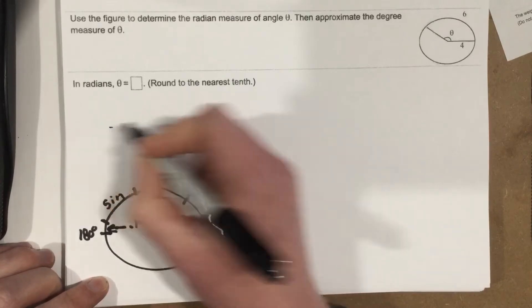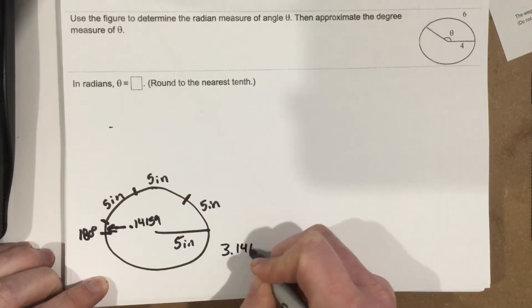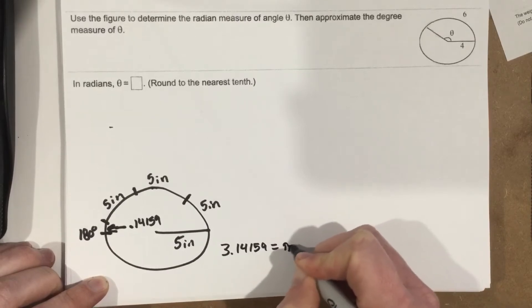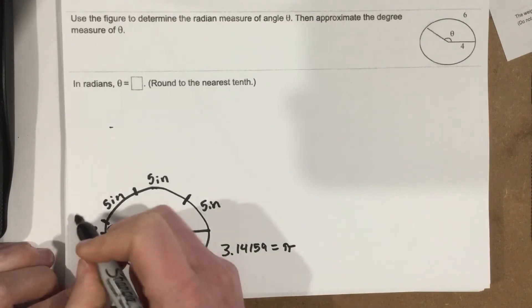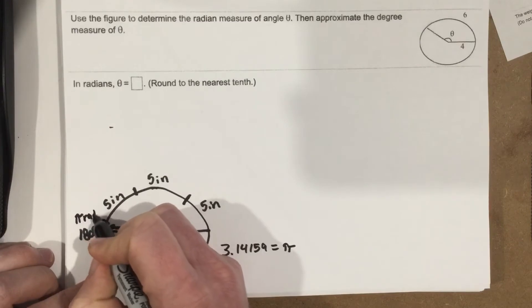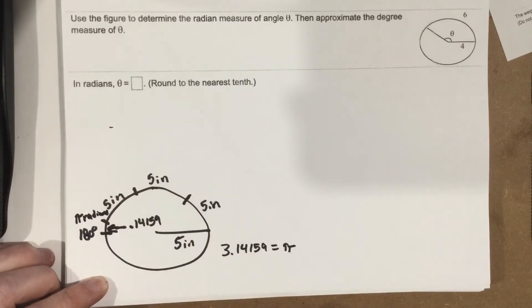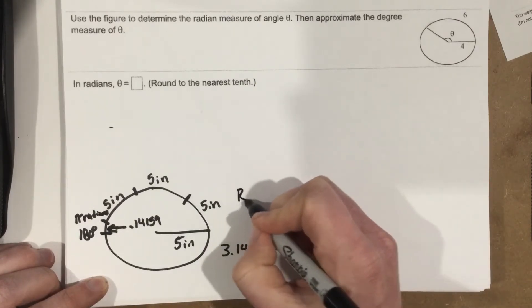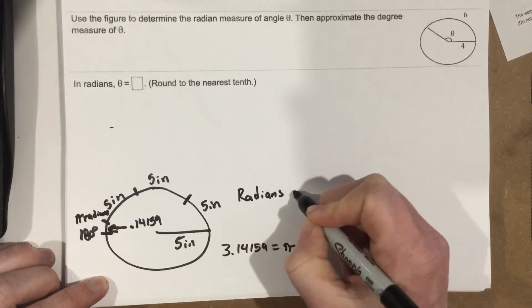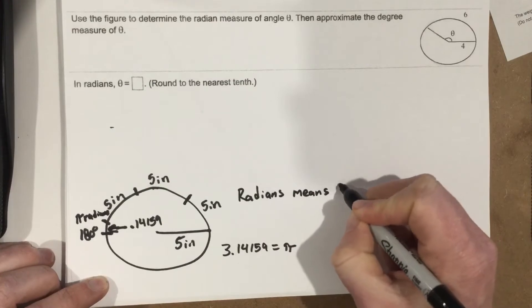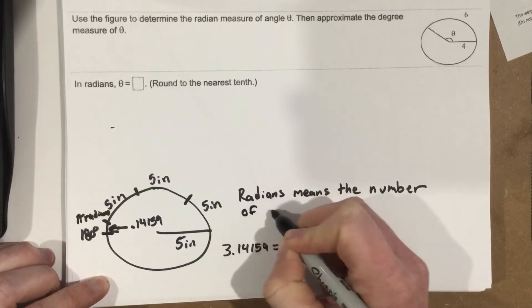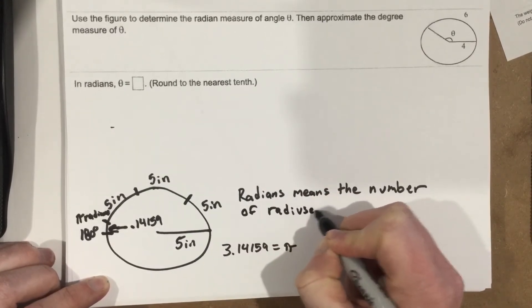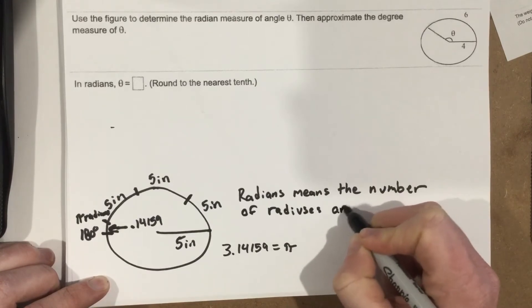What's that number? 3 point... We know 3.14159 is pi. So it takes 3.14159 radians to get to 180 degrees. So we call this spot pi radians. And all the radians means, all radians means is that it's a radius around the outside of the circle. So radians means the number of radiuses around the circle.